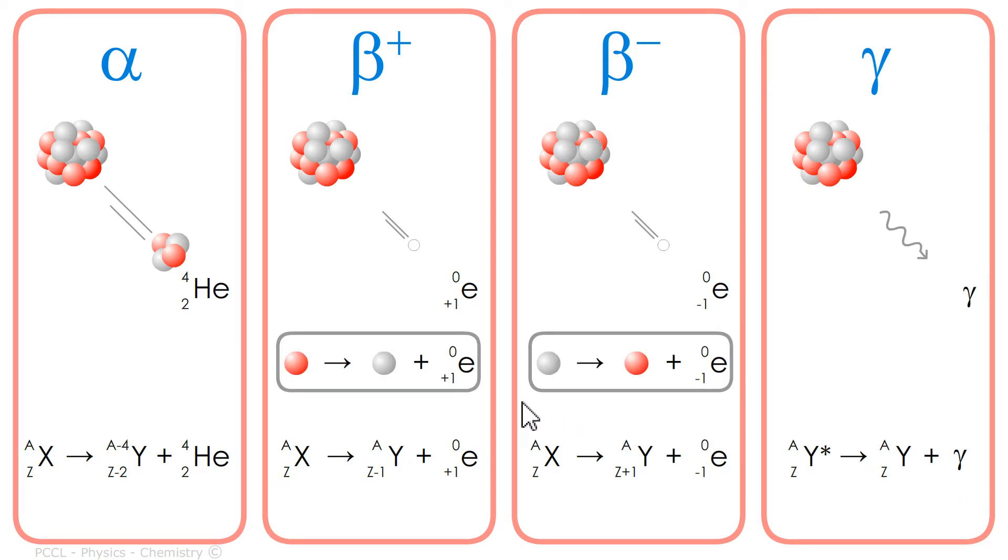I come back to beta decay. A proton changing into a neutron by releasing a positron and an electron neutrino which is not mentioned here. And the symmetrical here: a neutron can transform into a proton by releasing an electron and an electron antineutrino. This is called here the weak interaction. After the strong interaction, we have the weak interaction.